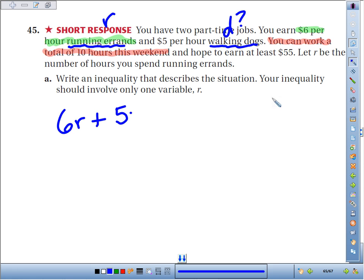So you've got to think, if I work for one hour running errands, that means I walk dogs for 9 hours. If I run errands for 5 hours, that leaves 5 hours for walking dogs. But in general, what if you run errands for R hours?